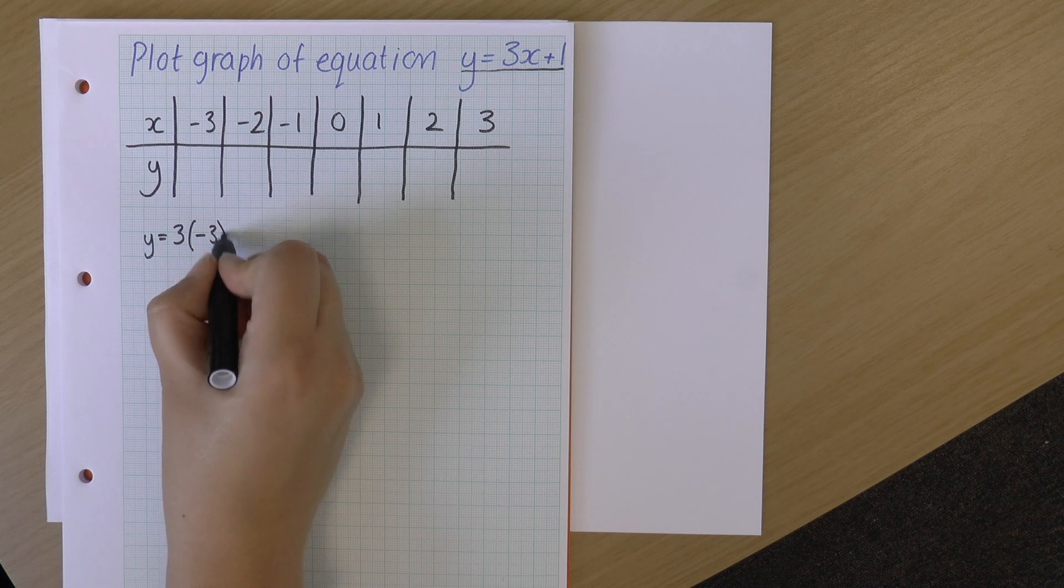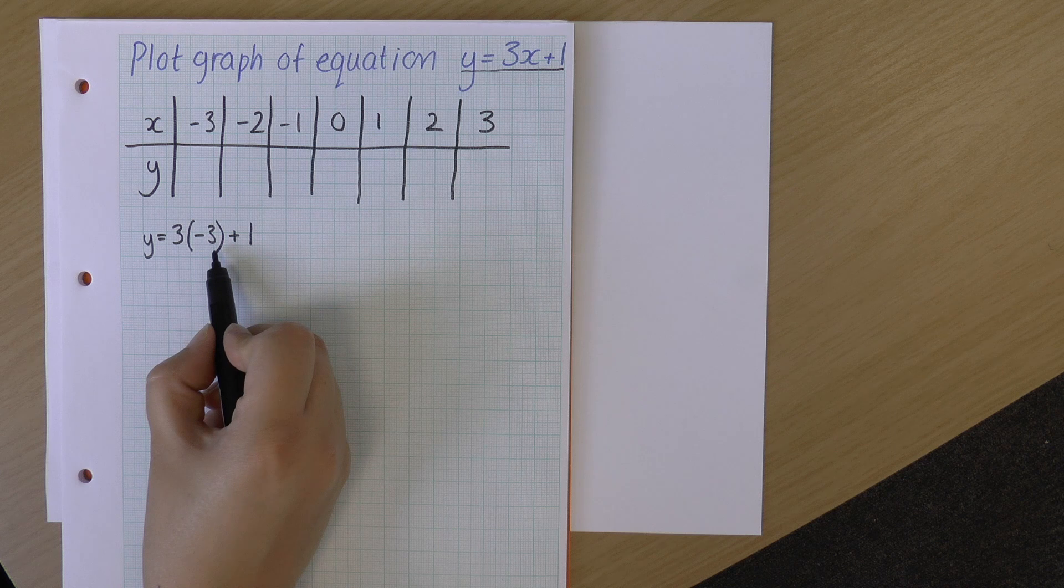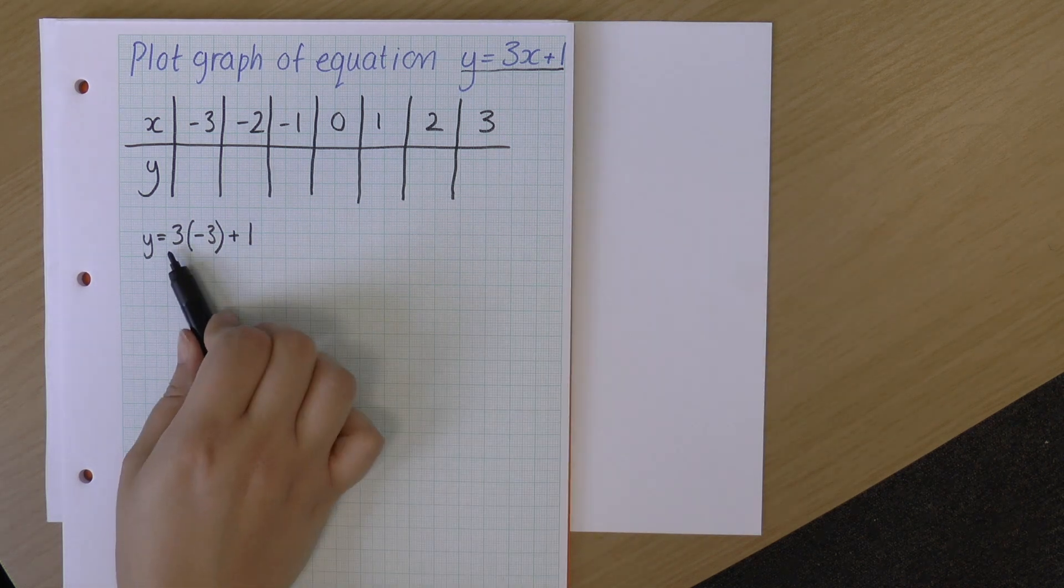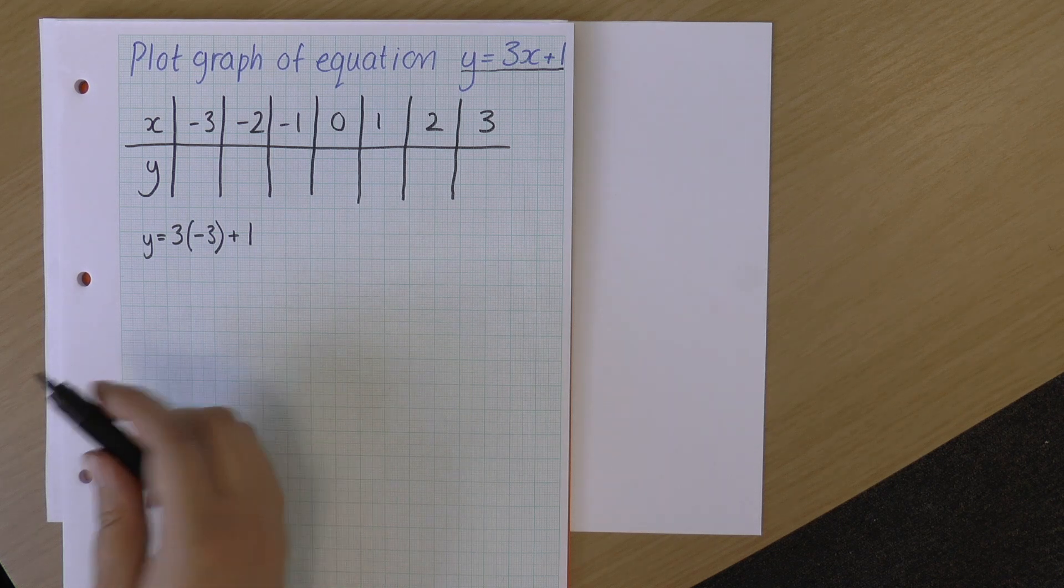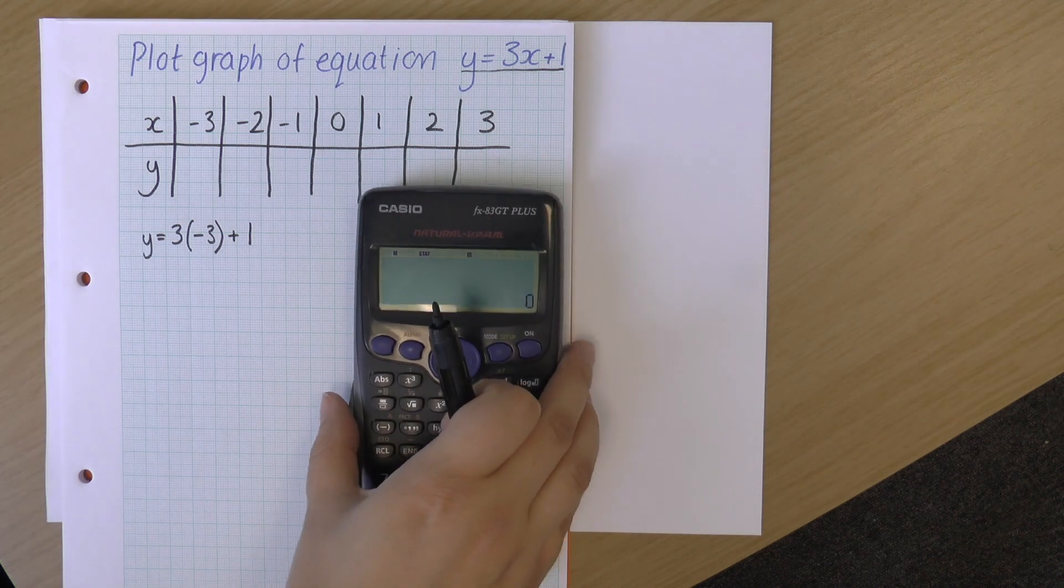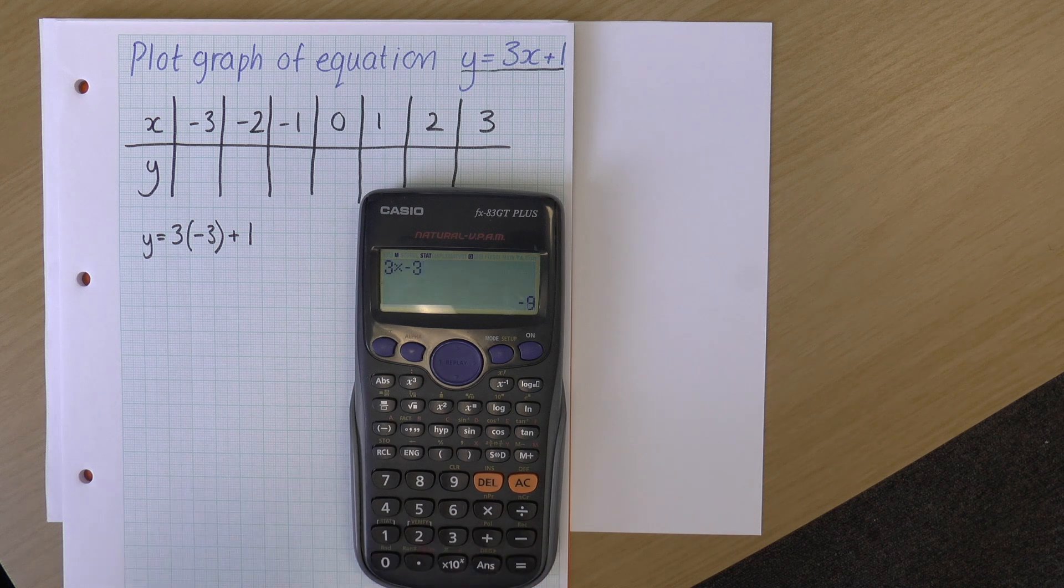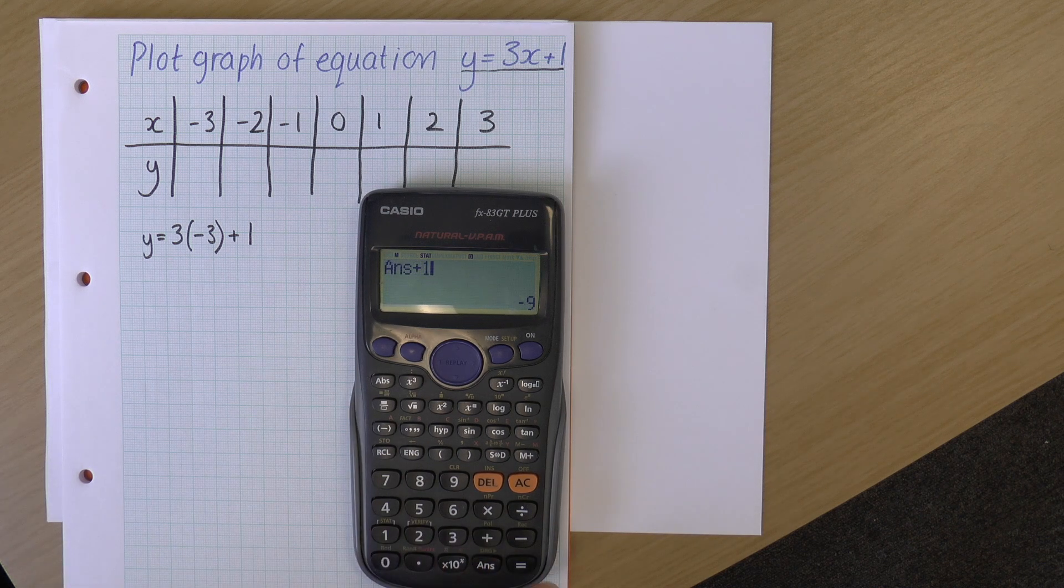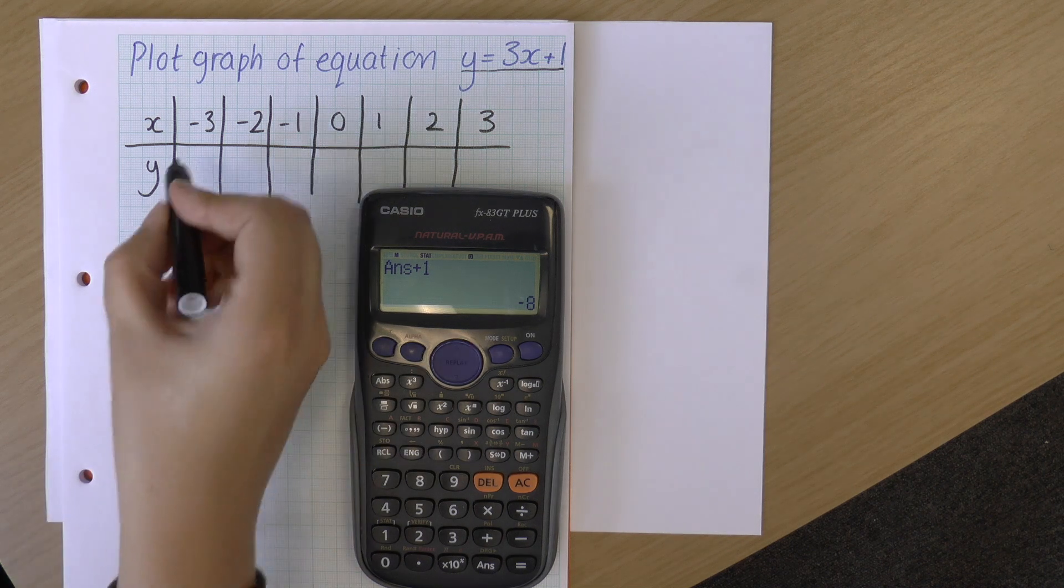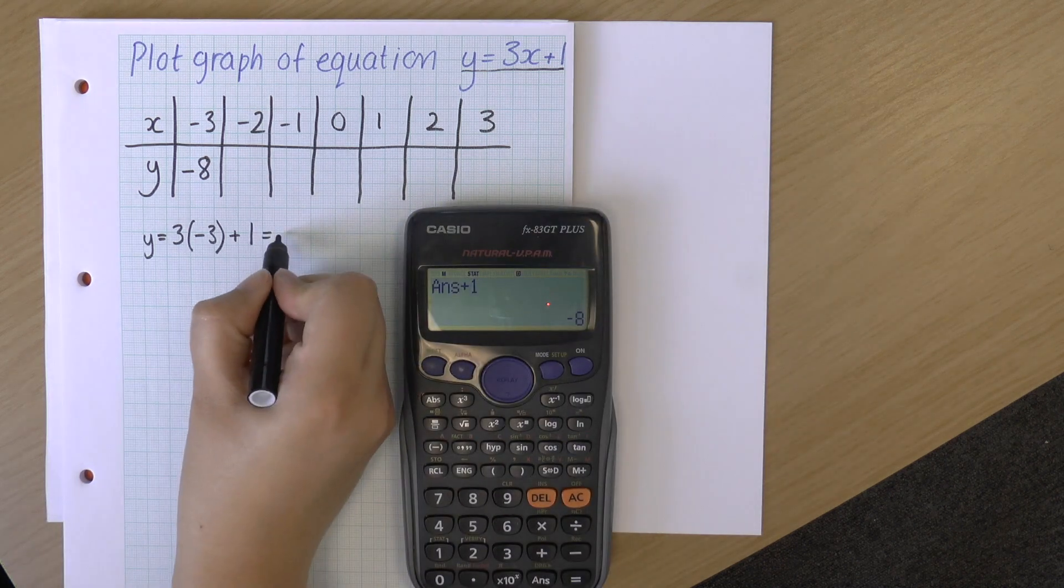So I've got y equals 3x plus 1, and I'm just going to replace that x with one of these numbers. I'm going to start on the left. So y is 3 times minus 3, because that's what that means. Remember 3x is 3 times x. So 3 times minus 3 plus 1. So what I can do is I can actually put this in a calculator to make my life easier.